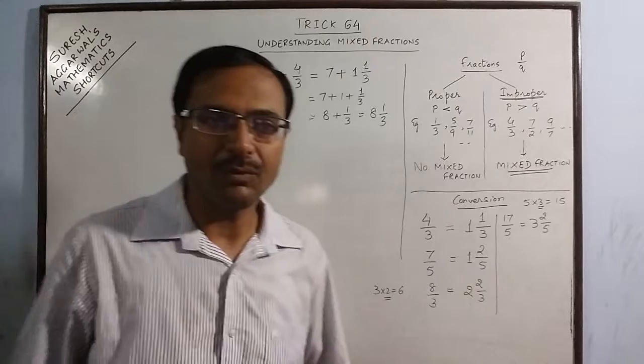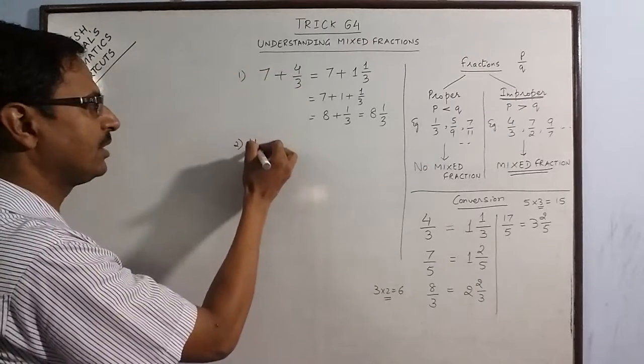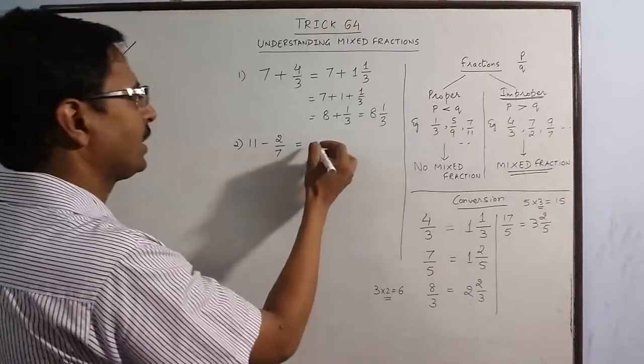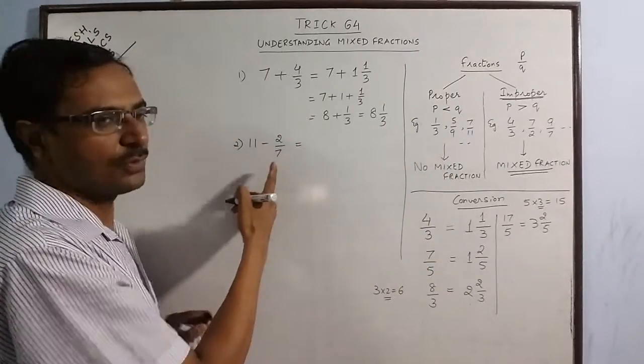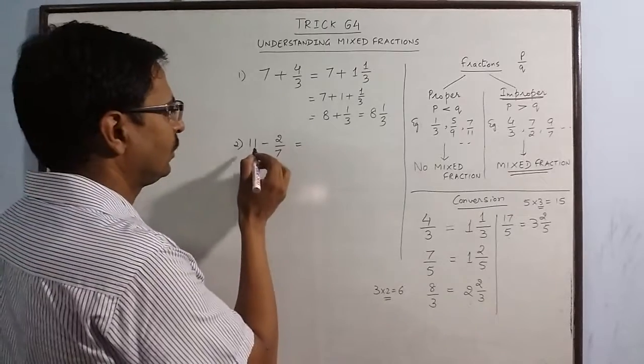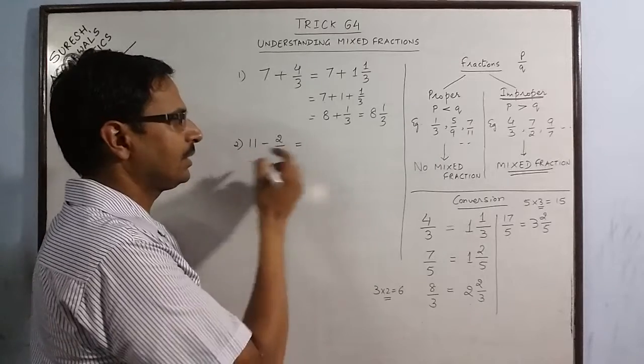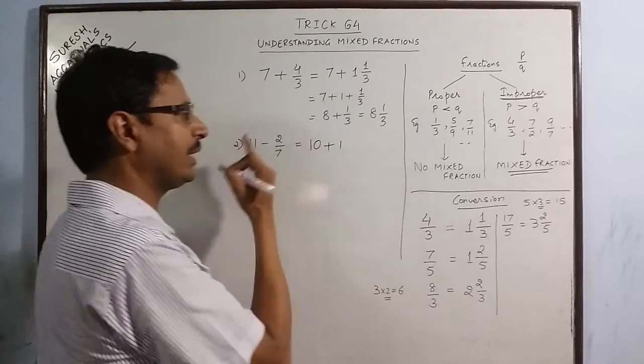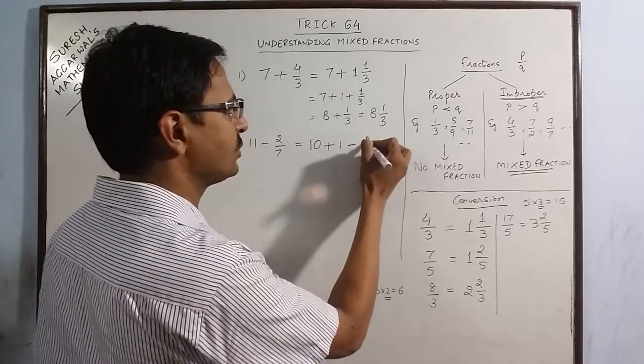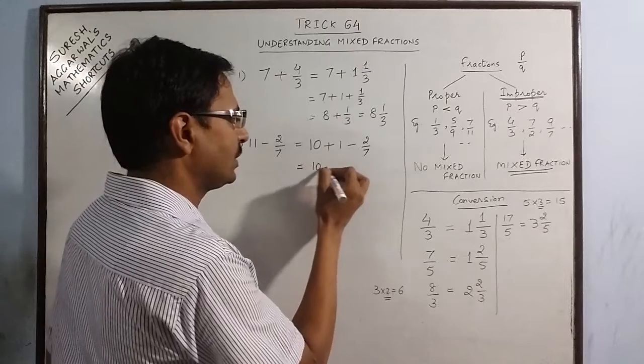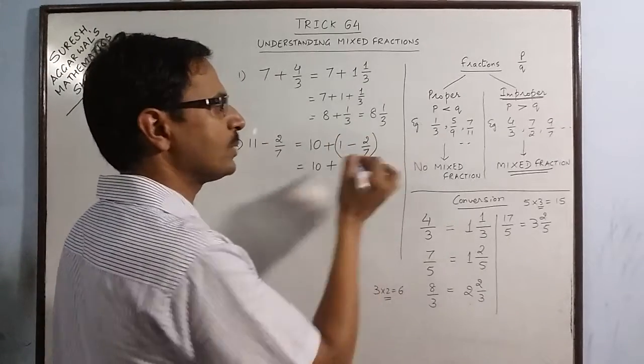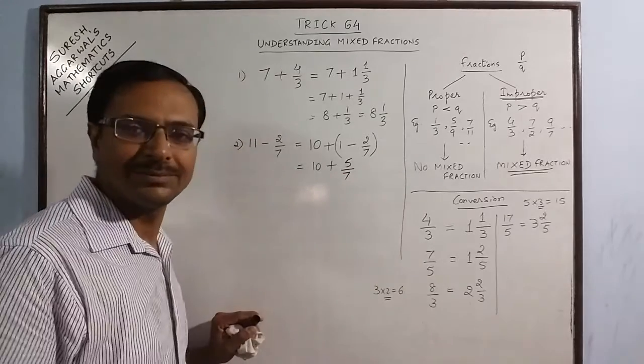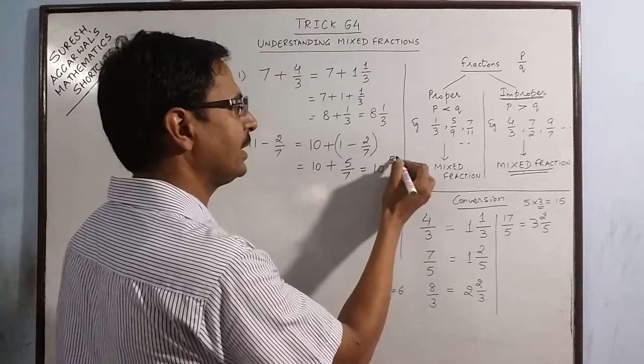Similar things can be done when we are subtracting the numbers. Say we have to subtract 11 and 2 by 7. Now when we subtract 11 and 2 by 7, 2 by 7 is already a proper fraction, so we do not need to convert it. What we do is, we can split this 11 as 10 plus 1. We can remove 1, whatever number is there here, we can remove 1. Then 1 minus 2 by 7: just subtract 7 minus 2 is 5 and the denominator is 7. So the final answer is 10 and 5 by 7.